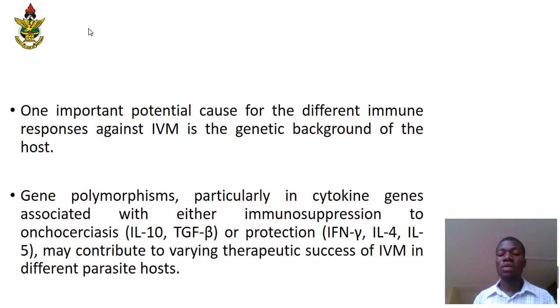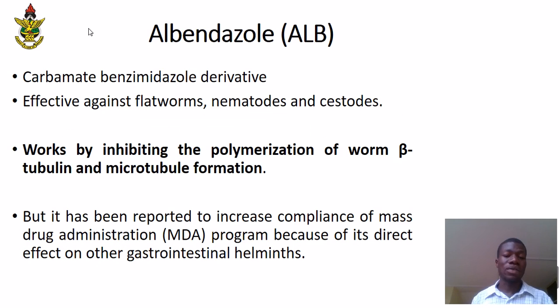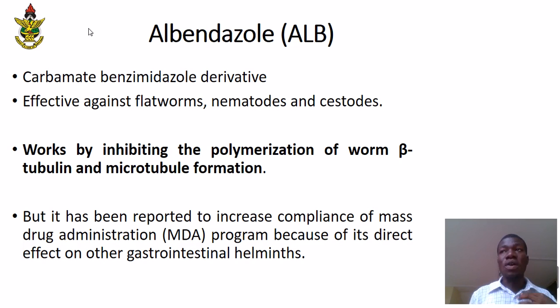The second type of drug is albendazole. Albendazole is very common and is also effective against roundworms, nematodes, and cestodes. It works by inhibiting the polymerization of the worm's beta-tubulin and microtubule formation. Albendazole has also been reported to increase compliance to mass drug administration programs because of its direct effects on other gastrointestinal health conditions.